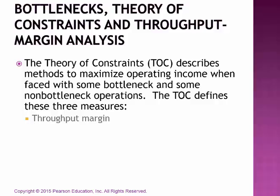There's this thing called throughput margin, and throughput margin equals revenues minus the direct material cost of the goods sold. If you guys plan on taking the CMA exam, I can assure you these are formulas that you would want to know. So throughput margin equals revenues minus direct materials for cost of goods sold.